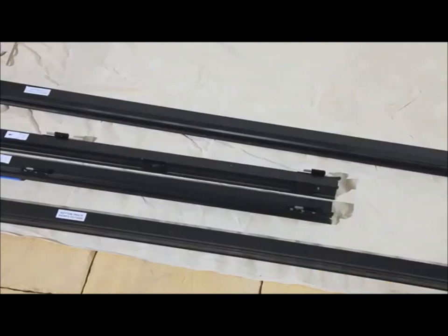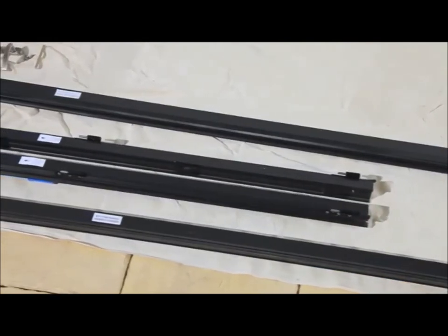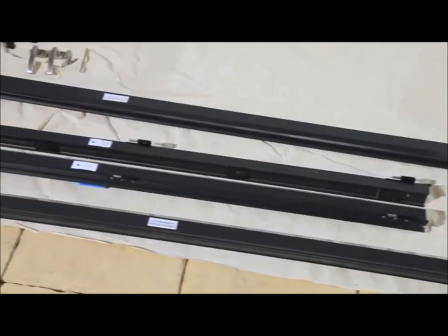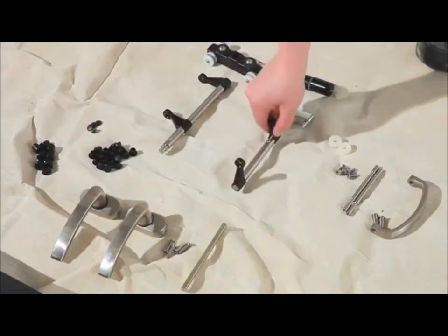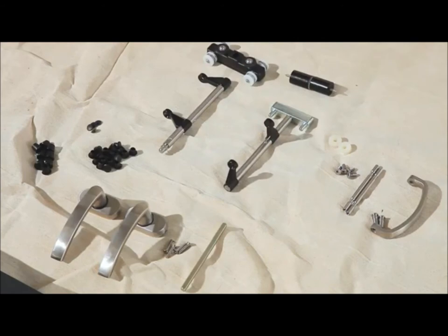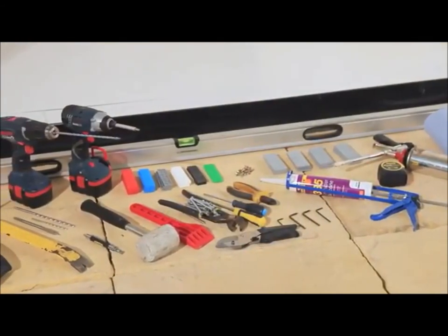Check before you start that you have all the components you need. Every set includes one top and bottom track and left and right jam. The components box however is bespoke to your order, so follow the checklist provided.